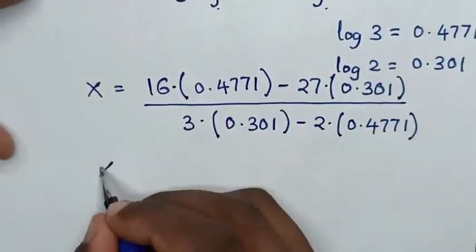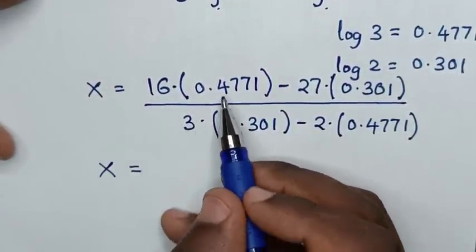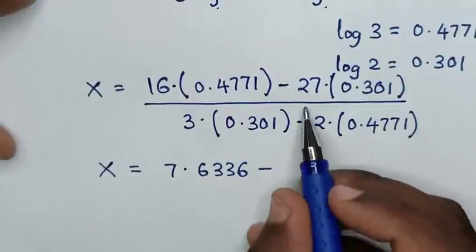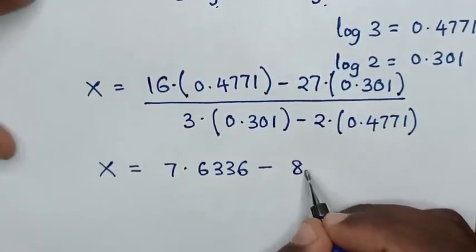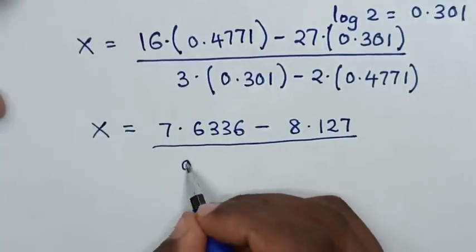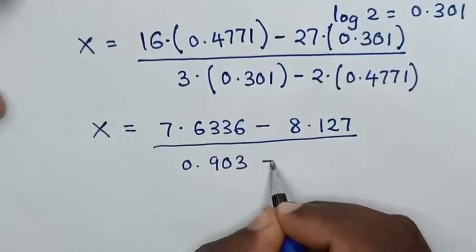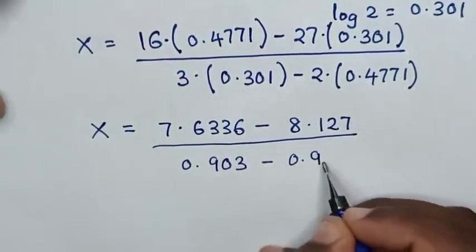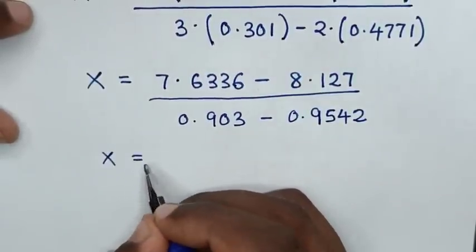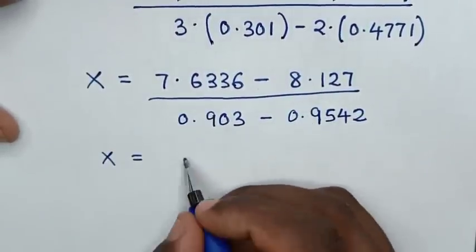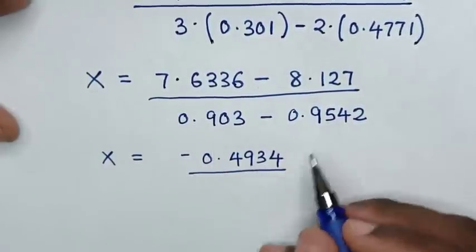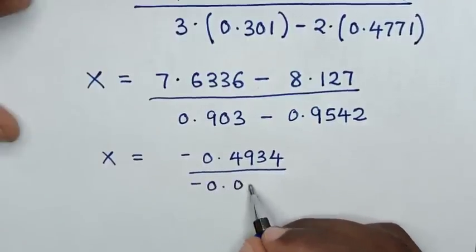Then, in the next step, x will be equal to: 16 times 0.4771 is 7.6336, then minus 27 times 0.301 is 8.127, then over 3 times 0.301 is 0.903, minus 2 times 0.4771 is 0.9542. Then, in the next step, x will be equal to negative 0.4934, over negative 0.0512.